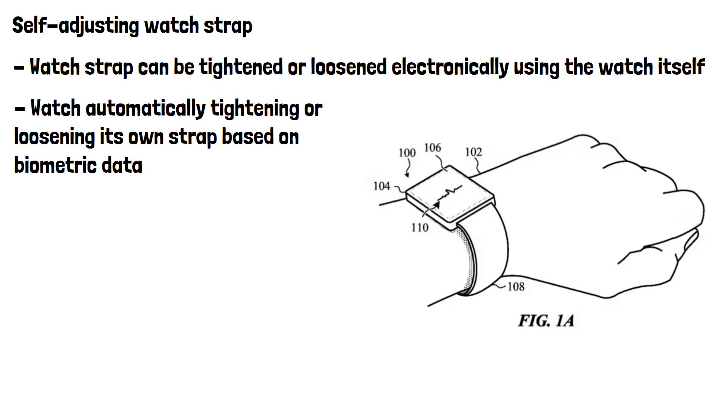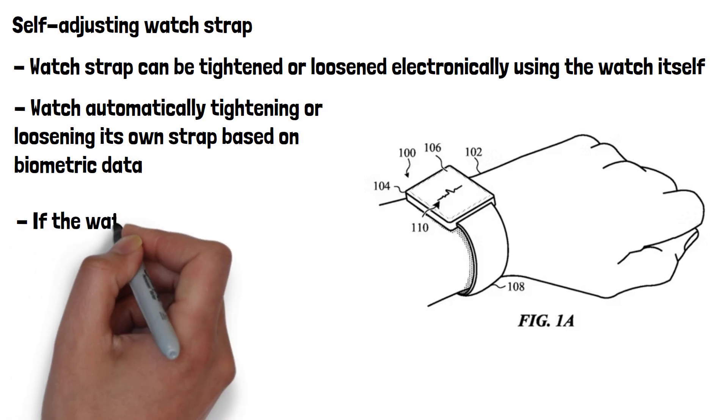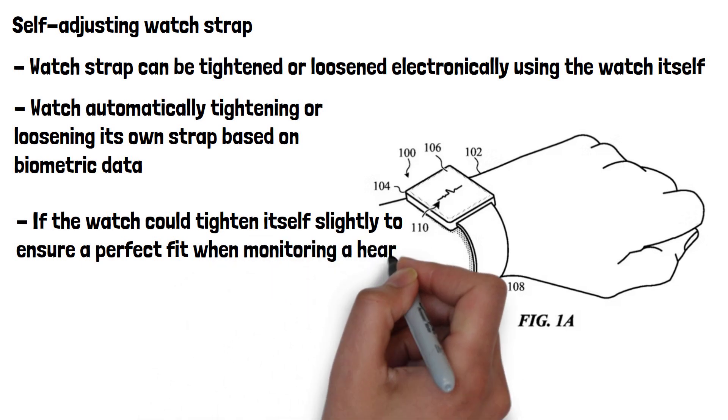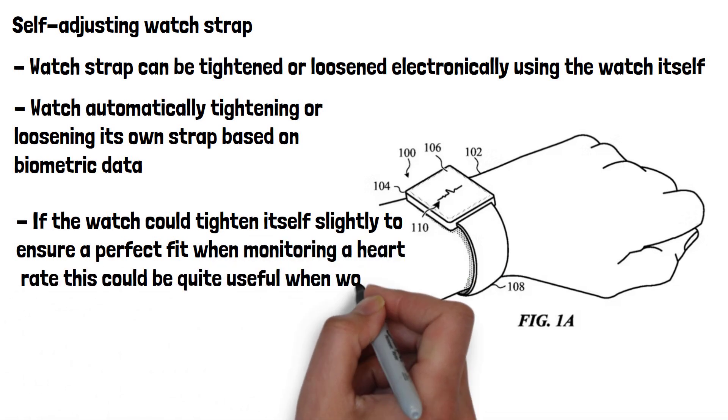If you've used a smartwatch to try and monitor your heart rate whilst moving around, you'll know it doesn't always measure your heart rate completely accurately. If the watch could tighten itself slightly to ensure a perfect fit when monitoring a heart rate, this could be quite a useful feature for those working out.